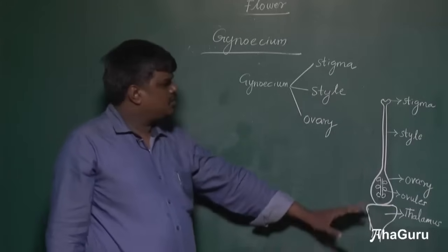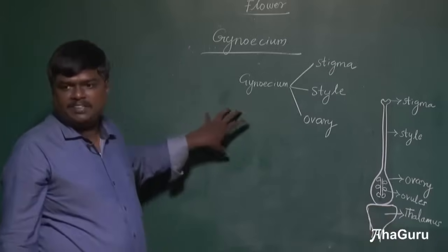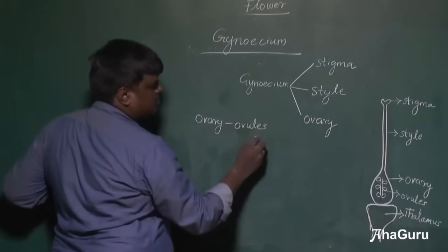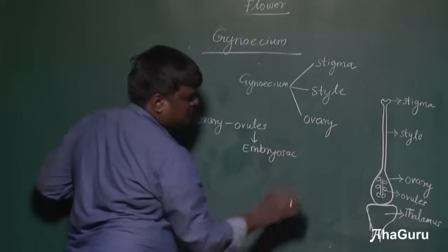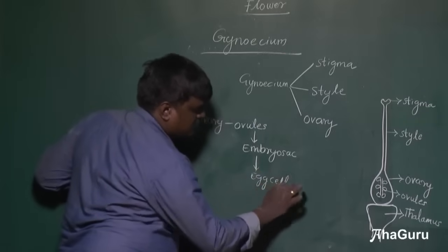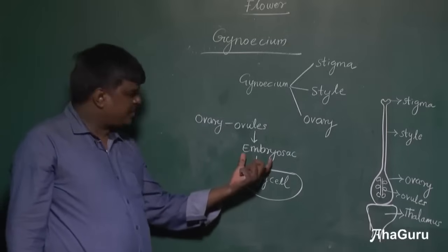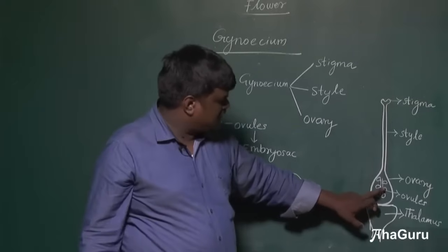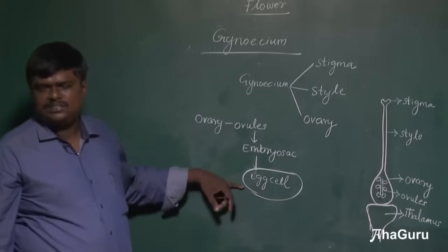The ovary contains ovules, and the base is called the thalamus. The female gamete is present in the ovary. Within the ovules there is a structure called the embryo sac, and within the embryo sac the egg cells are present. This egg cell contains the female gamete. So the ovary contains ovules, ovules contain the embryo sac, and the embryo sac contains the egg cell which is the female gamete.